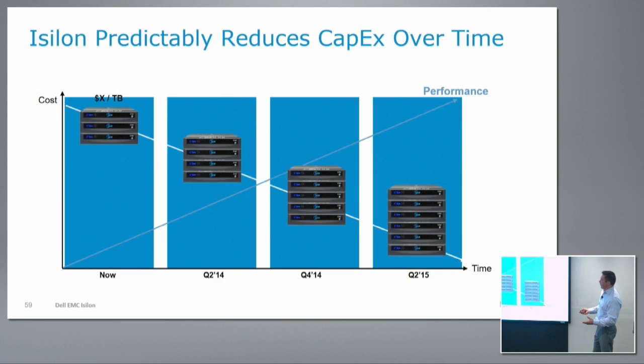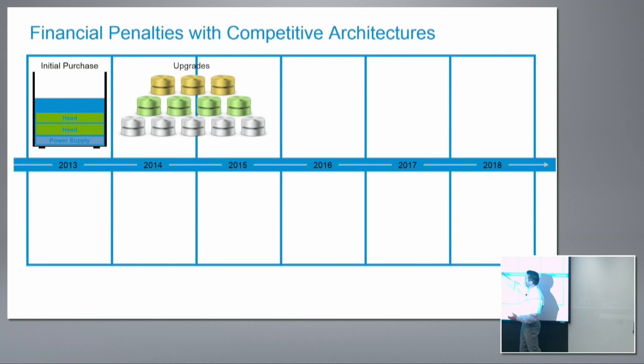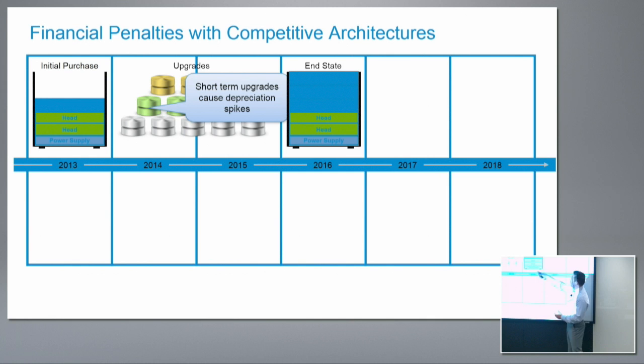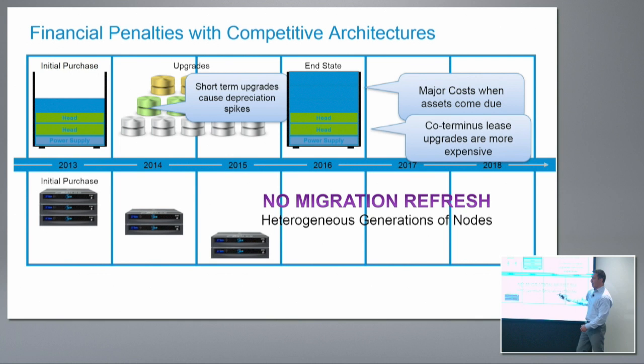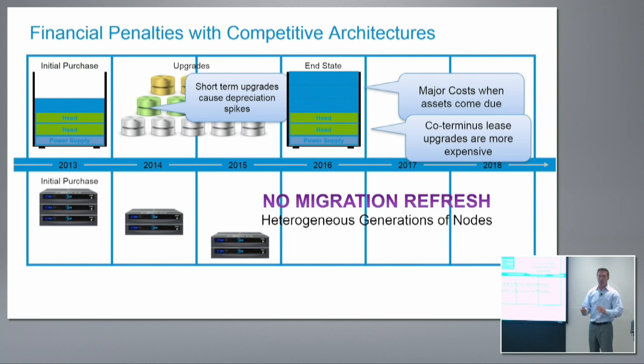I also don't have to worry about tech refreshes. There's no such thing as filling up a node and needing to buy a larger frame, or having an array go out of support after five years requiring a forklift migration. It's simply: add nodes in, then take nodes out the back. As nodes age out, you take them out. Data is migrated into the new nodes and automatically rebalanced across them. It makes migration a thing of the past — no more forklift upgrades. All of that stuff you see with traditional arrays just goes away.